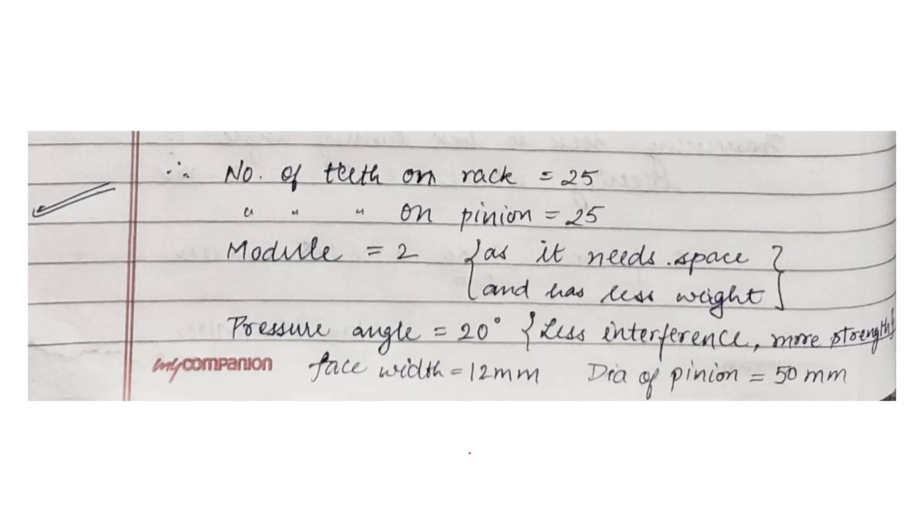So the final values we get as teeth on the rack is 25, teeth on pinion as 25. As we have discussed, the module is taken as 2 because it requires less space and has less weight. The pressure angle for the gear will be 20 degrees as it has less interference and more strength. And the face width is 12 mm, diameter of pinion we have discussed.